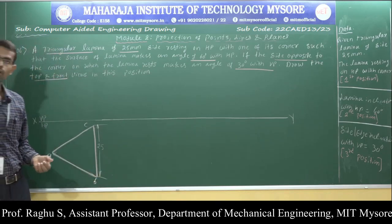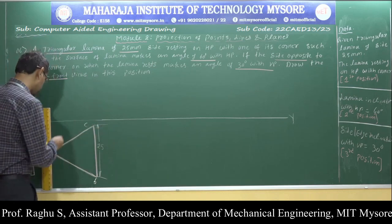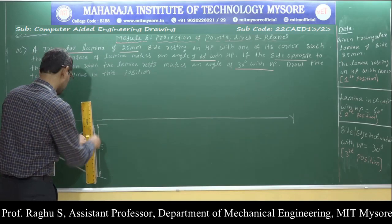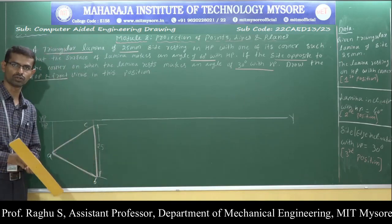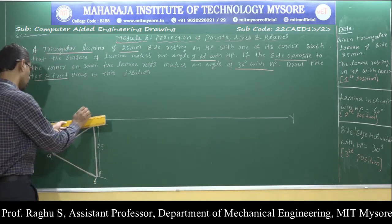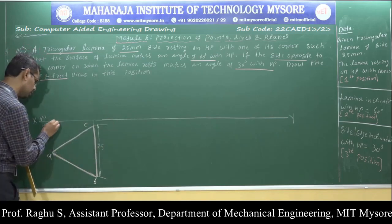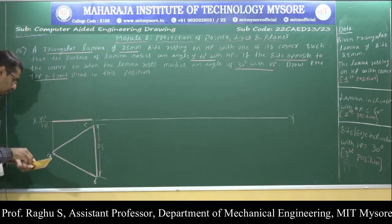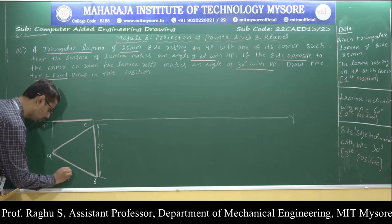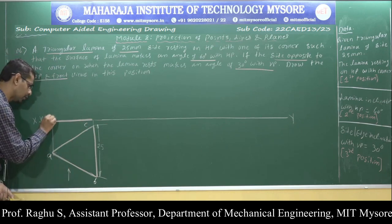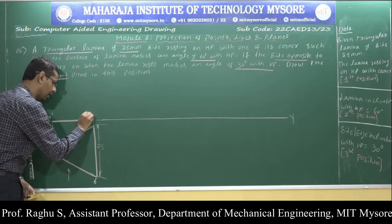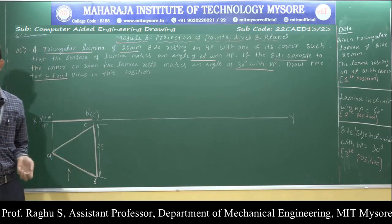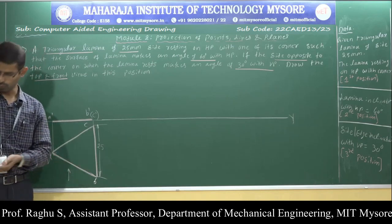Draw upward projections to get the front view. In the front view, A is visible, B is visible, and C is invisible. I have completed the first position — top view and front view.